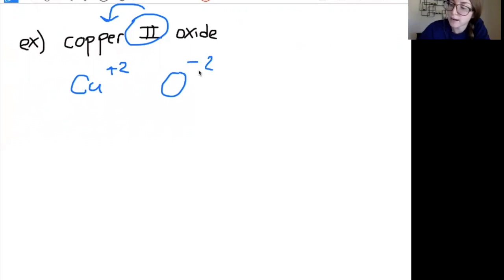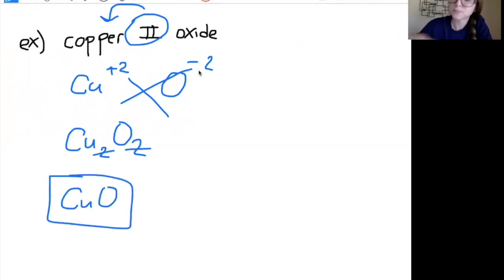So then I crisscross, I would get Cu2O2. But remember that if we can reduce, we should reduce. We're just looking for how many of each do I need to cancel those charges out. So really, I have CuO as my answer. That's it. Go try those.